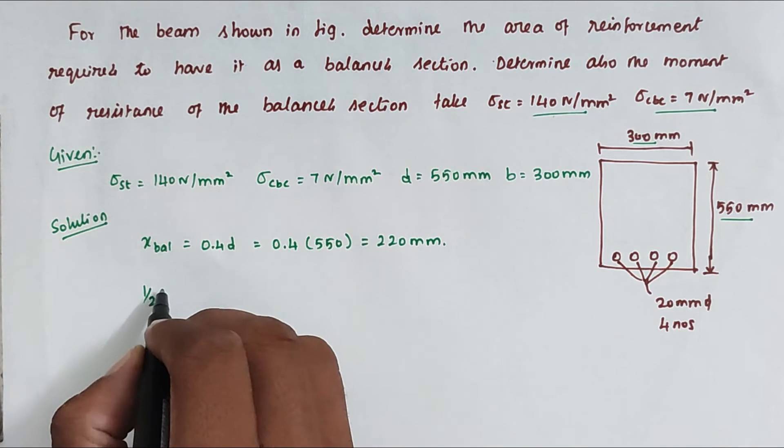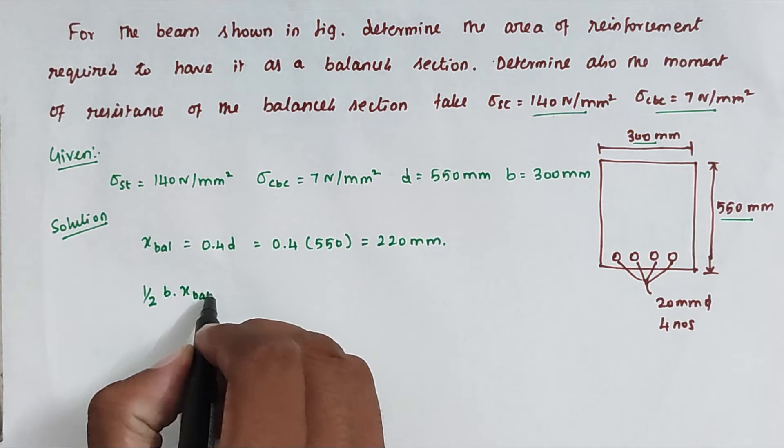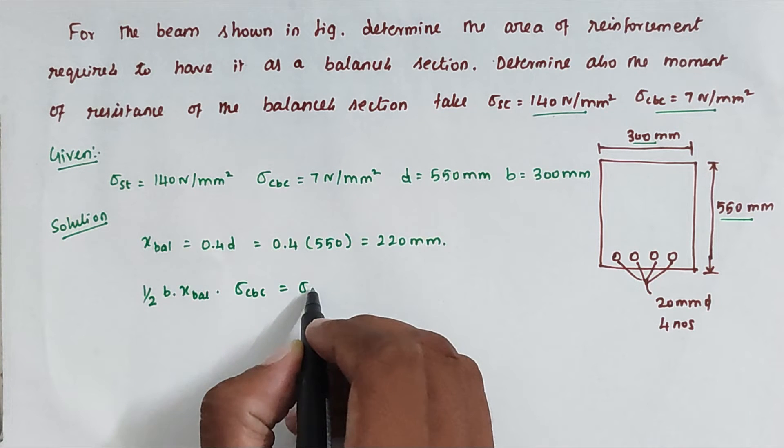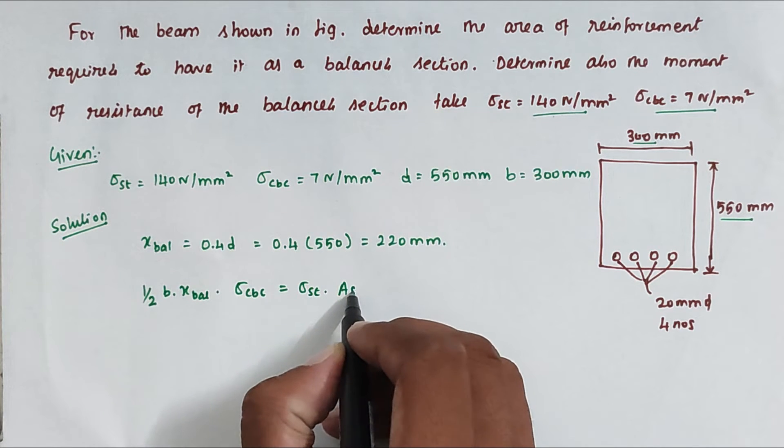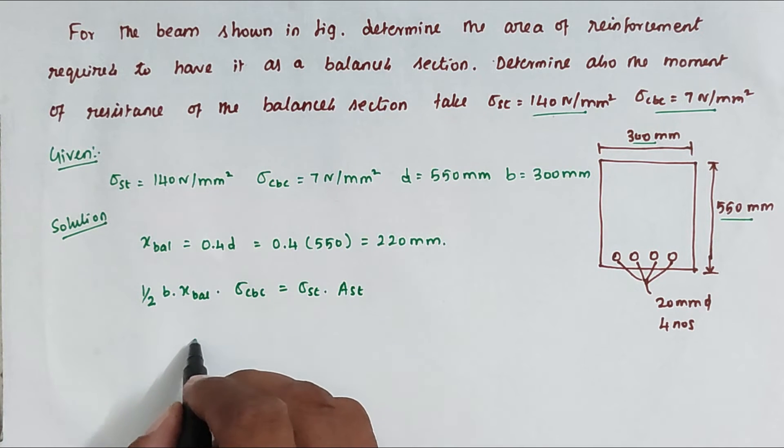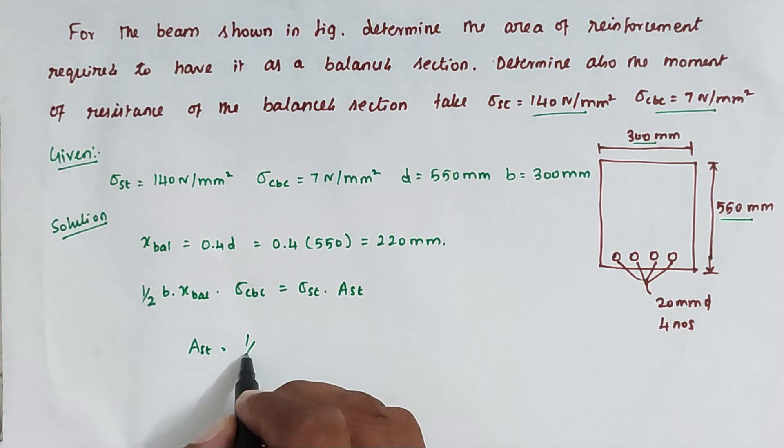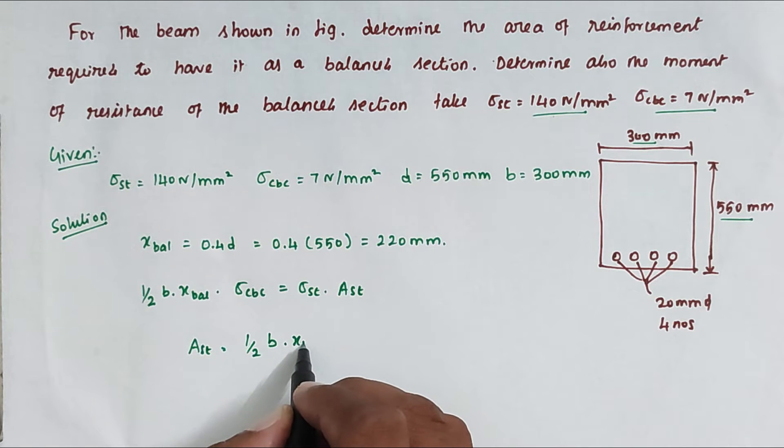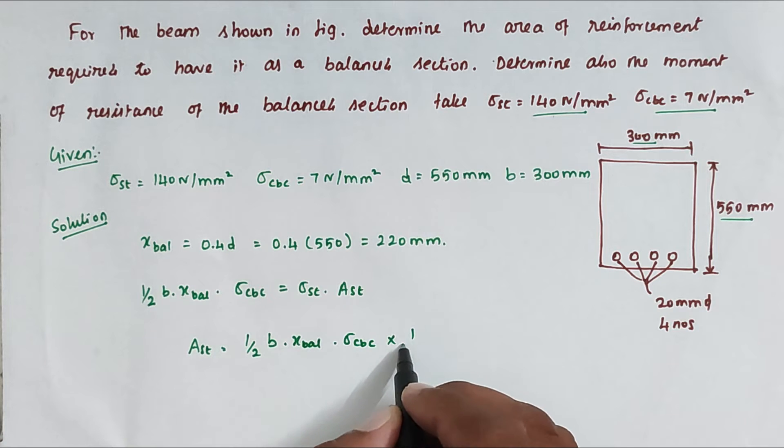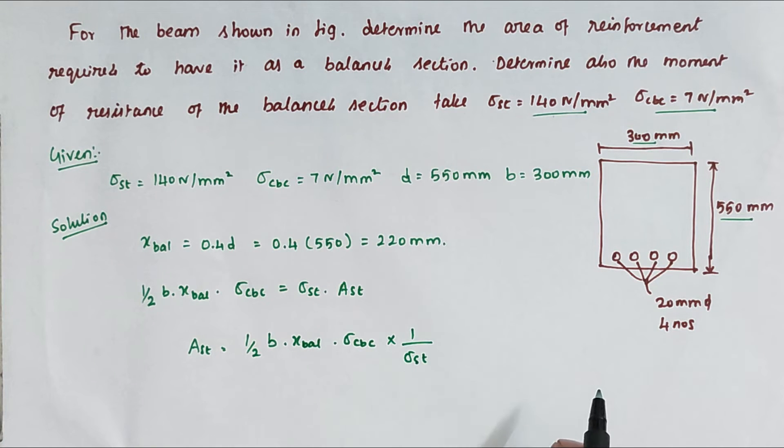So ½ × B × X_bal × σ_CBC = σ_ST × A_ST. Now we have to find out the A_ST value, so A_ST = ½ × B × X_bal × σ_CBC × 1/σ_ST. Now we can substitute all the values.